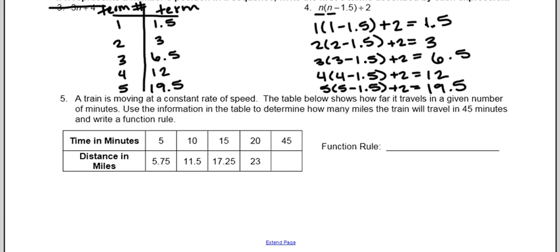Okay, last question. The train is moving at a constant rate of speed. The table below shows how far it travels in a given number of minutes. Use the information in the table to determine how many miles the train will travel in 45 minutes and write the function rule. Let's find the function rule first since now we know this really nifty trick with L1 and L2. The problem with this table, though, is we're really used to seeing an up and down table with an X and a Y, where your X's are always on the left.